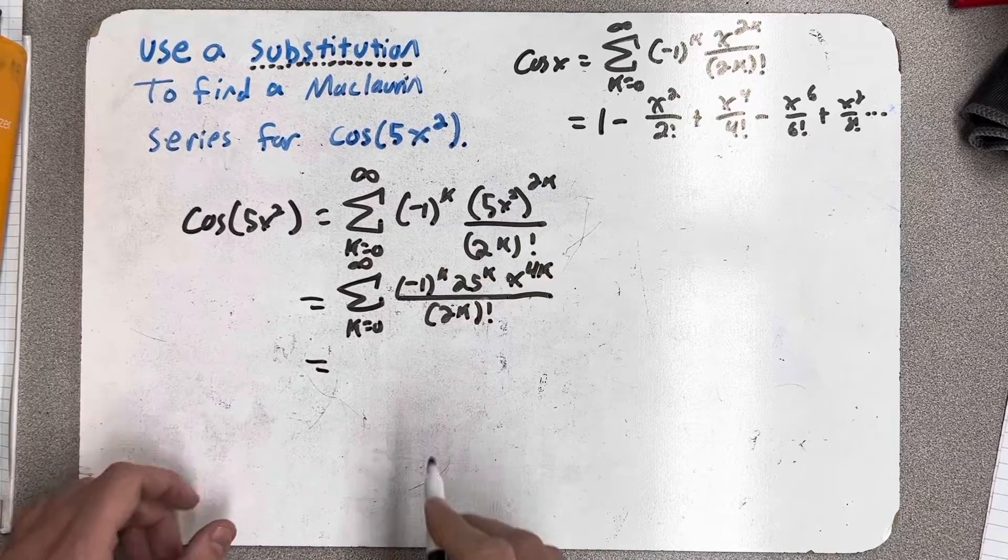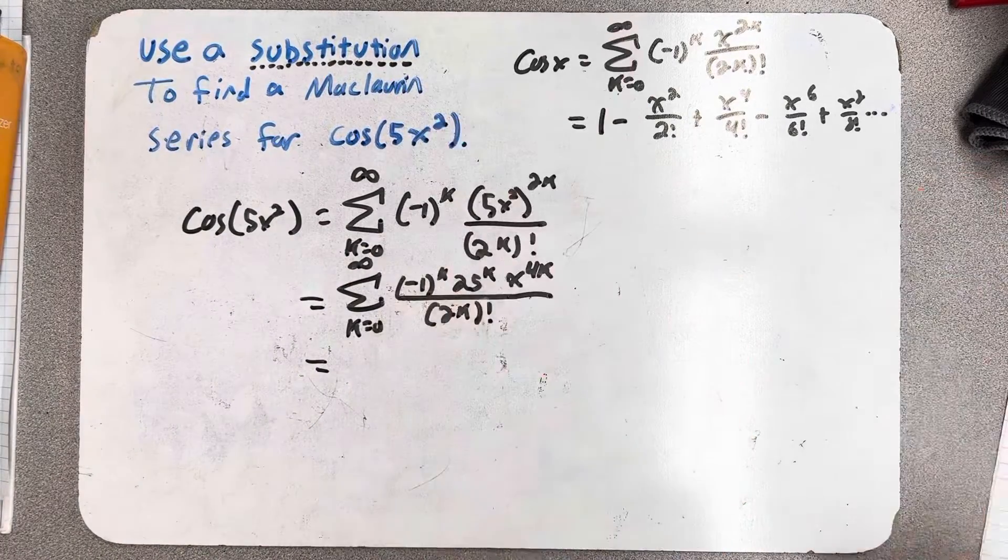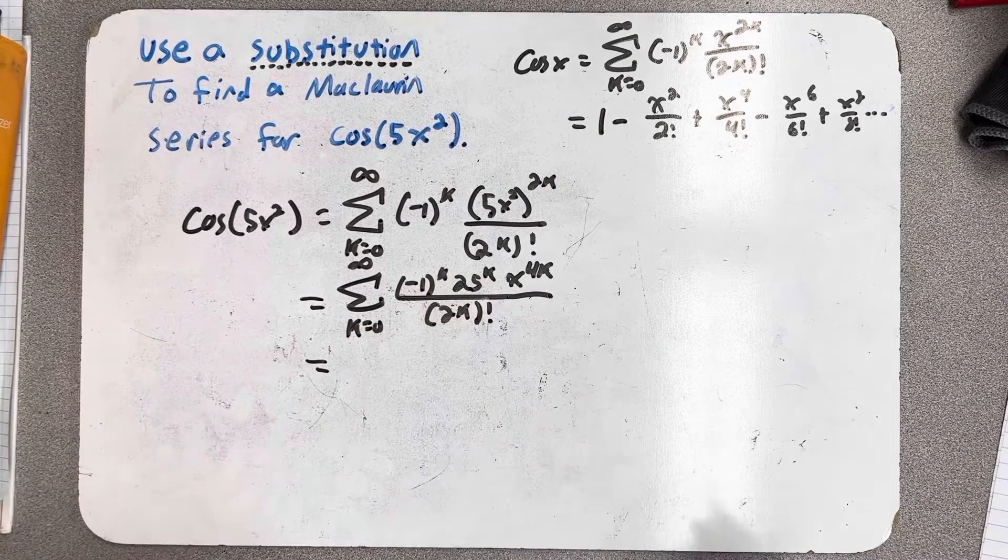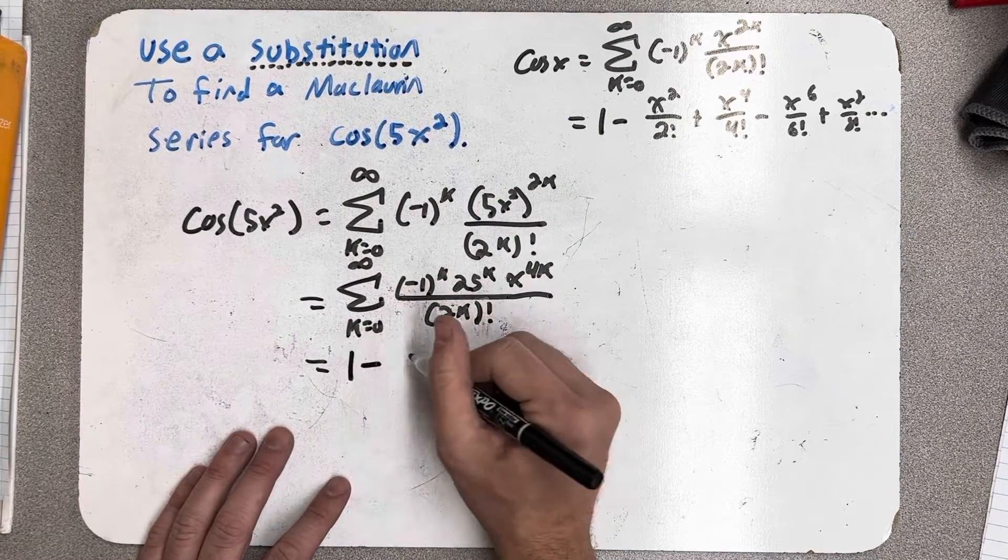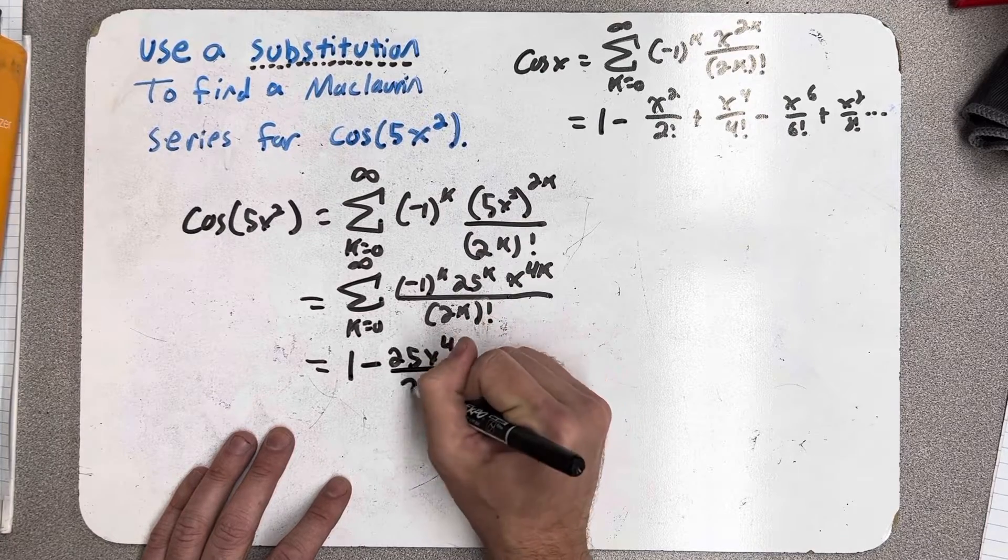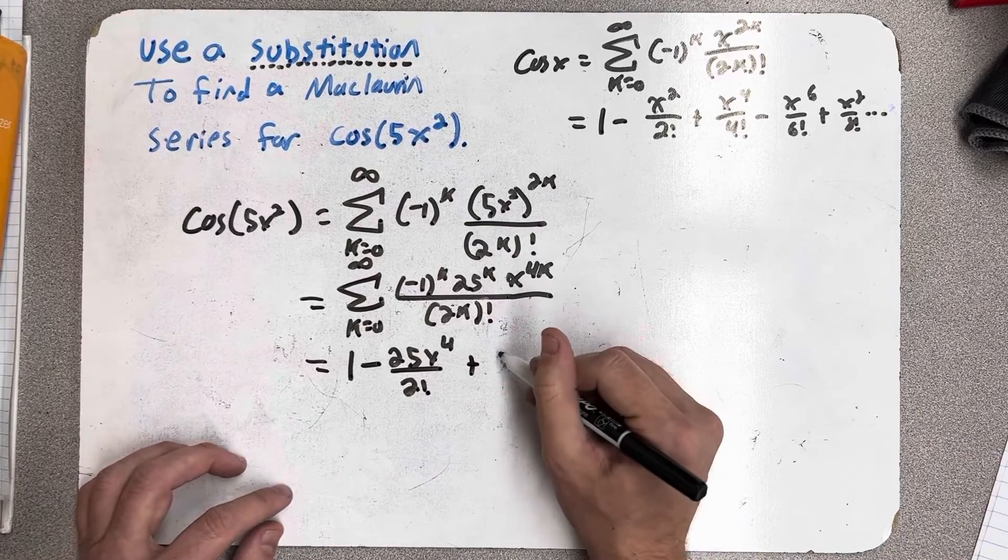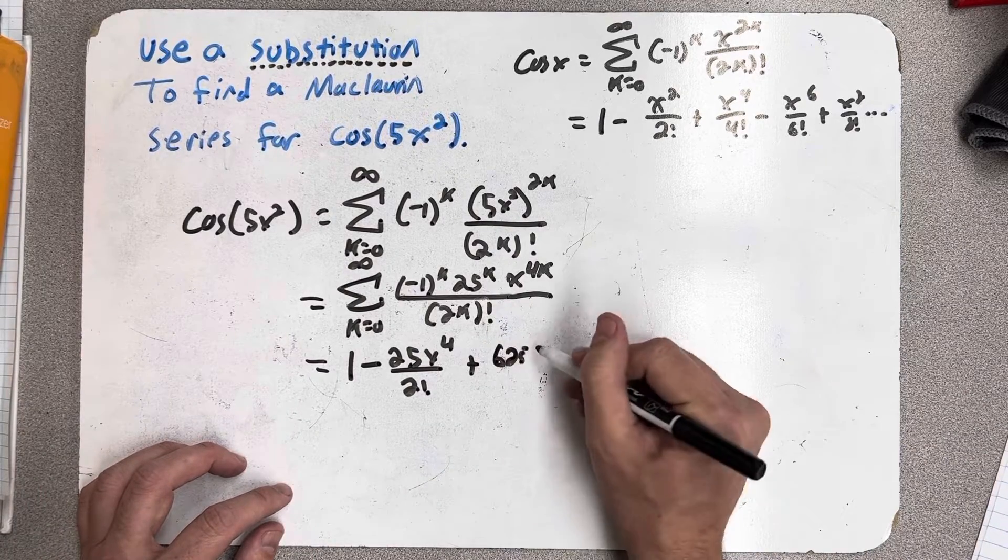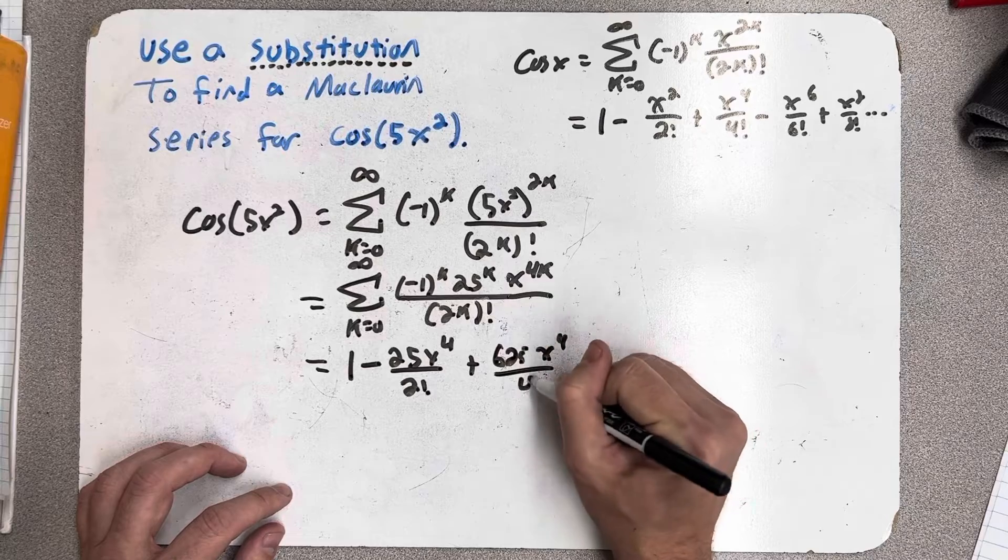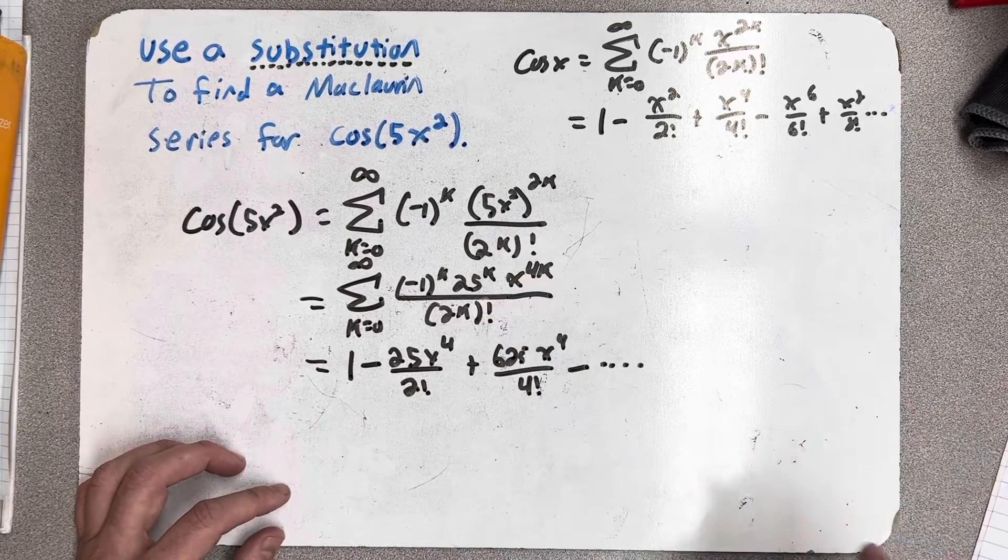All right, we can write out a few terms, either by thinking about what happens as I plug values in for k, or looking up here and replacing the x's with 5x squared. So, I have 1 minus 25x to the 4th over 2 factorial, plus, let's just do one more. Let's see, that's going to be 625x to the 4th over 4 factorial, and then we have the same alternating pattern going down.